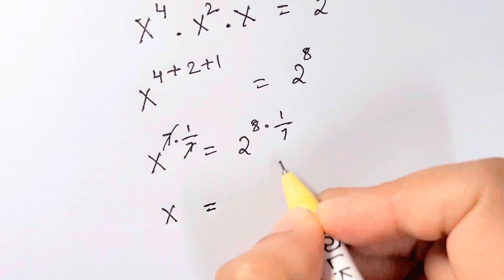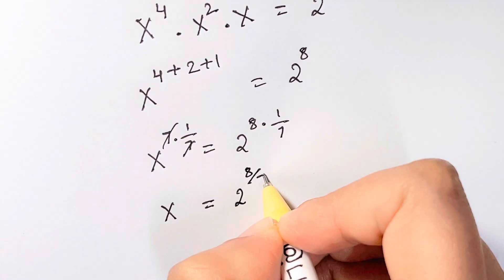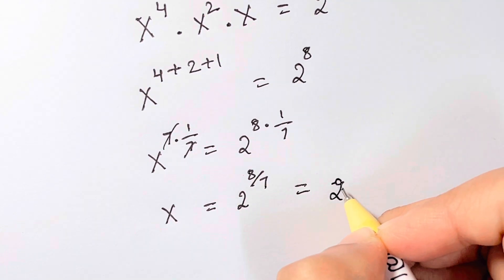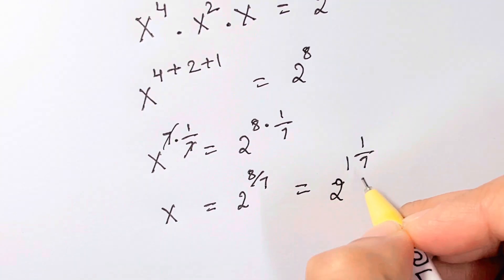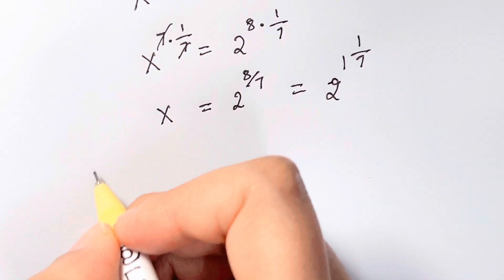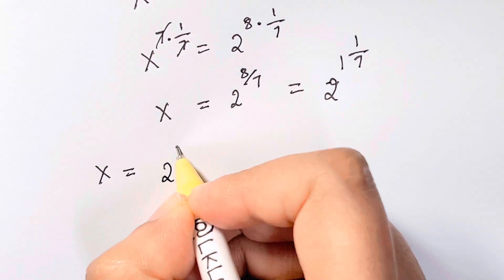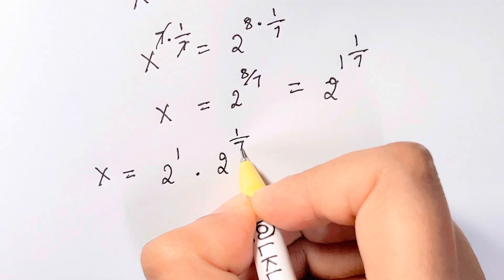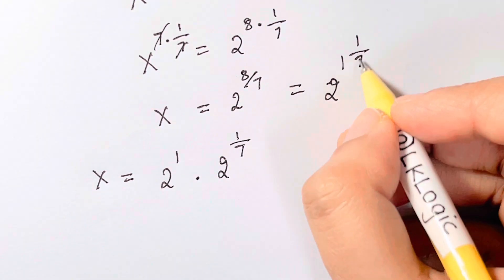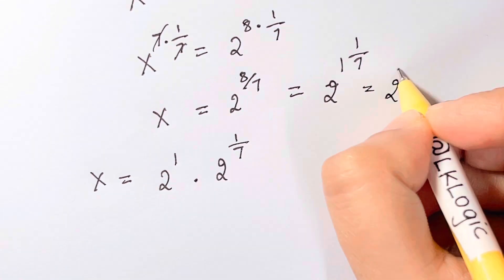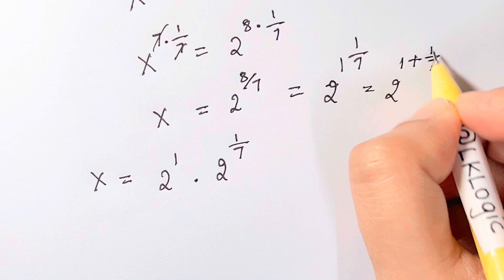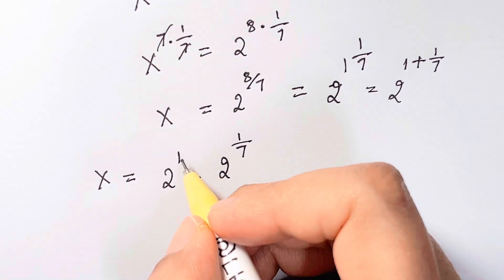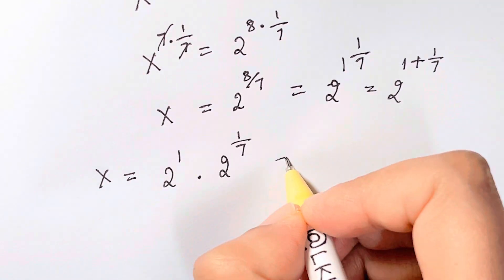You're left with x equals 2 to the power of 8 over 7. Now 8 over 7 can be written as 1 and 1 over 7, so x equals 2 to the power of 1 plus 1 over 7. You can split this as 2 to the power of 1 times 2 to the power of 1 over 7.